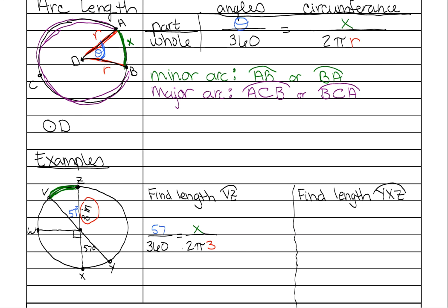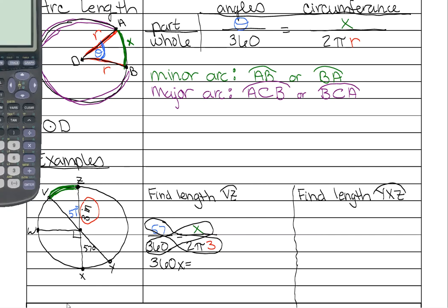Now all you do is you cross multiply and solve. So 360 times x is 360x. And you want to multiply this way. But in high school we usually leave our answers in terms of pi. So you're not going to multiply out pi.